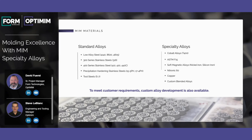Over on the right in the specialty alloy column, we have alloys such as T400, which is a cobalt alloy; ASTM F15, which some of you might have heard of under the trade name COVAR; soft magnetic alloys, which includes nickel iron and silicon irons; nitronic 60; copper. And we also want to mention custom blended alloys. We have a few proprietary alloys developed at OptiMIM.